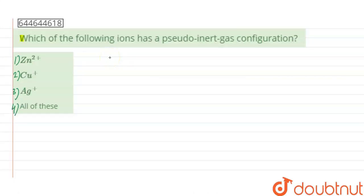Hello guys, the given question says which of the following ions has a pseudo inert gas configuration?